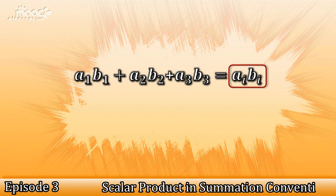So, in Einstein's summation convention, we have A1 B1 plus A2 B2 plus A3 B3 is equal to Ai Bi.